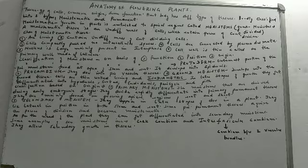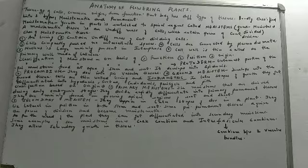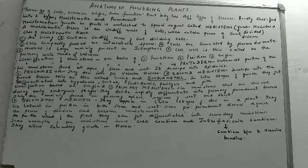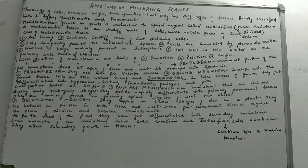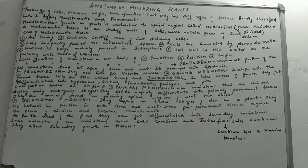The second type on the basis of origin is secondary meristems. They appear in the later stages of development of a plant. Sometimes the primary permanent tissues regain the power of division and become meristematic again. So first: primary meristems convert into primary permanent tissues. But sometimes these primary permanent tissues again get back the power of division and become meristematic, which can differentiate into secondary meristems — all depending on the need of the plant.